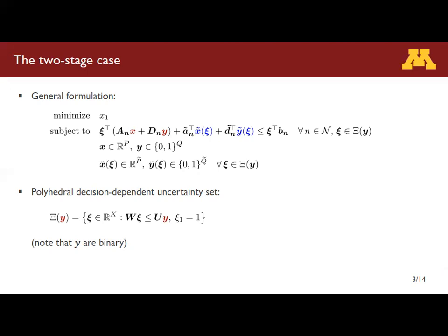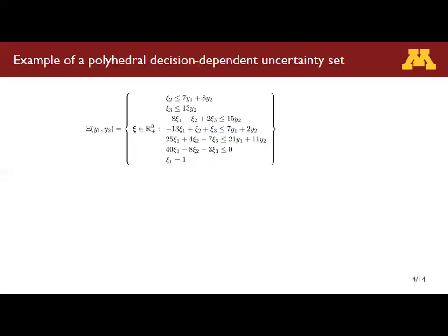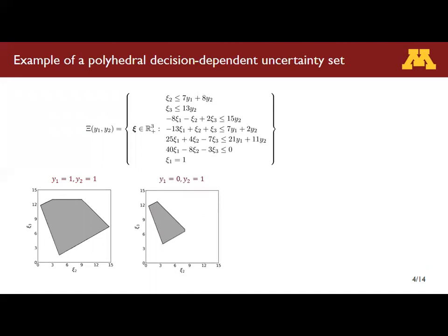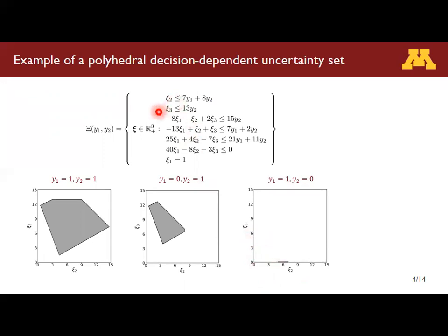This type of uncertainty set is sufficient to model both Type 1 and Type 2a endogenous uncertainty. Here is a simple example of decision-dependent uncertainty sets. There are two uncertain parameters since C1 has already been fixed to 1. This uncertainty set depends on two binary variables, Y1 and Y2. If both Y1 and Y2 are one, we obtain this uncertainty set. Then if Y1 equals 0 and Y2 equals one, the uncertainty set changes to this one. However, if Y1 is one and Y2 is 0, C3 is fixed to 0 because of this inequality.